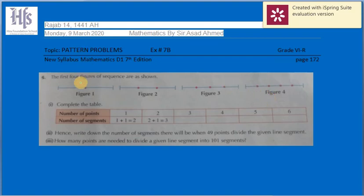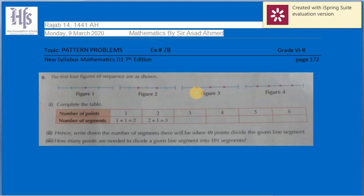Each figure is divided by a number of points. Figure one is divided by one point into two segments. Figure two is divided by two points into three segments. Figure three has three points and four segments. Figure four has four points and five segments.